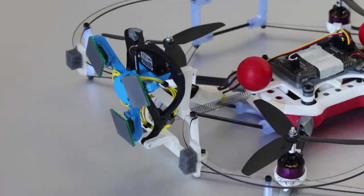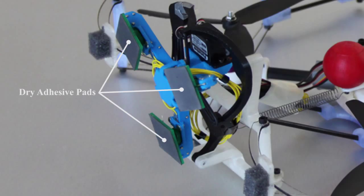The gripper mechanism uses three directional dry adhesive pads in a triangular configuration. Each pad is equipped with a force sensor that can detect the pad's loading condition. A servo motor is used to actuate the attachment and detachment of the gripper.